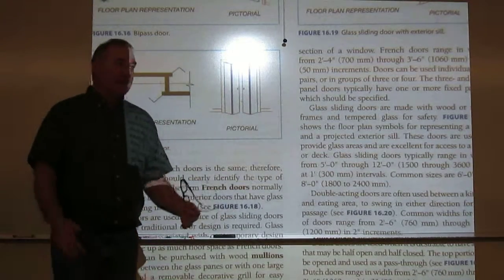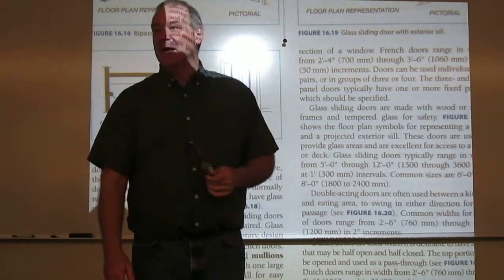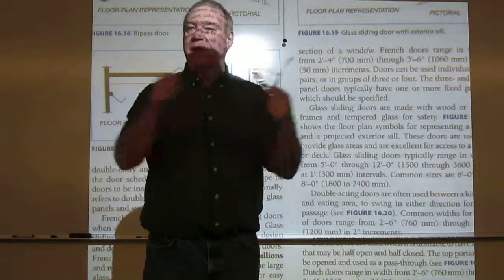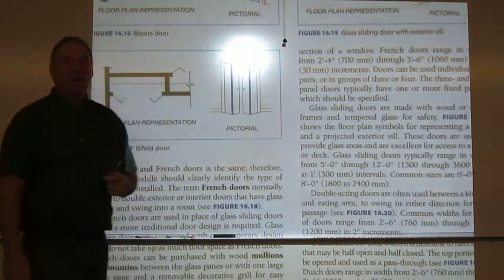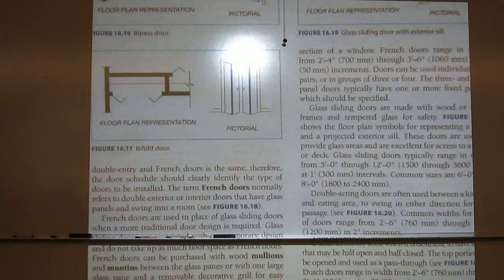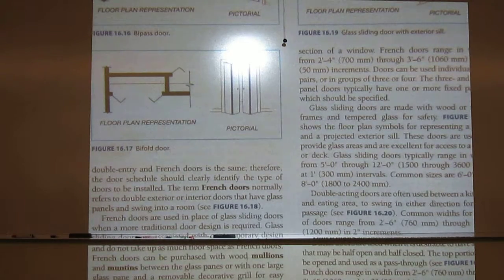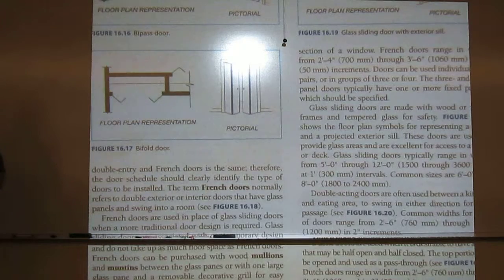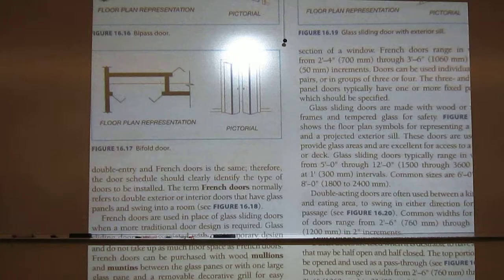Temporary accordion walls cause a lot of problems. If you look at newer schools like CSI gym or Canyon Ridge, they've gotten rid of all the accordions. Now they drop a big net to divide spaces for multi-use. What about barn doors?